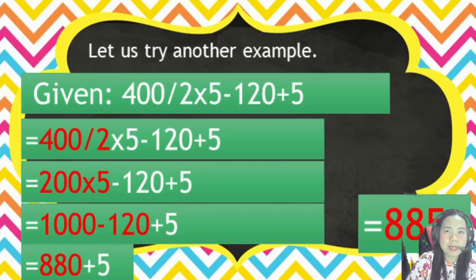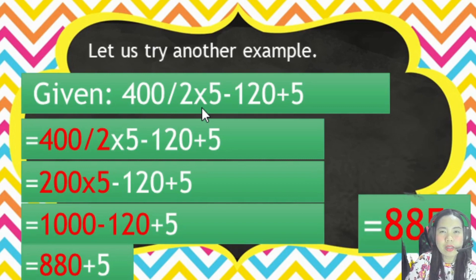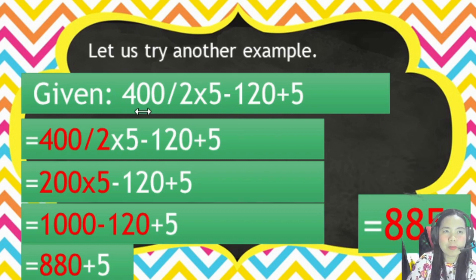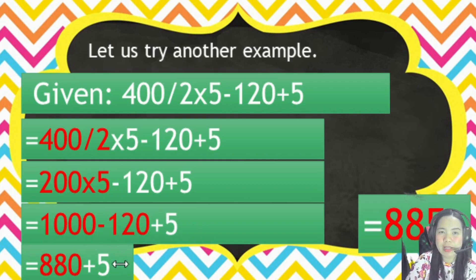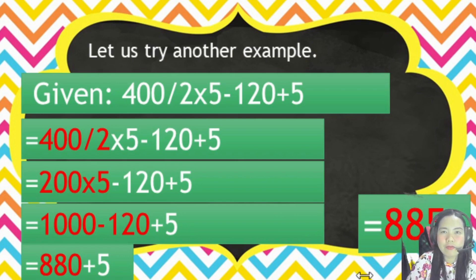Again, when we have division and multiplication, then subtraction and addition, we do division and multiplication from left to right first — that is what we did. Then subtraction and then addition from left to right. So the final answer is 885.